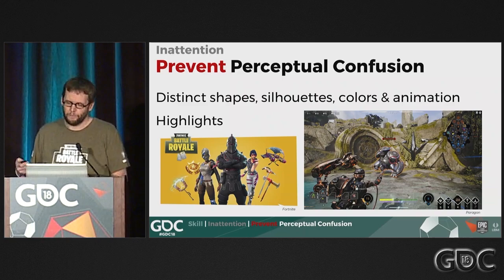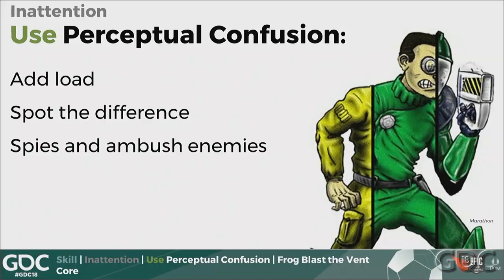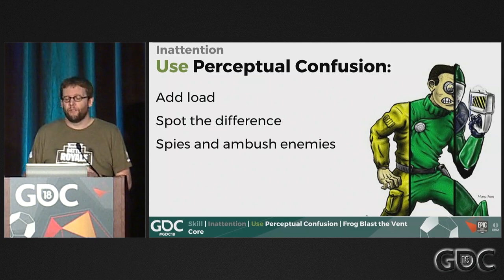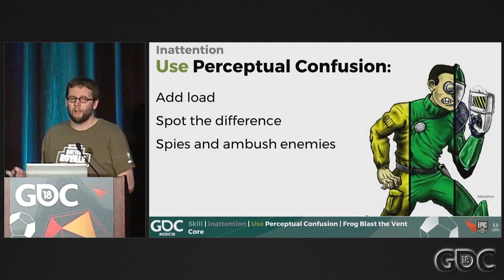You can of course use perceptual confusion intentionally. Spot-the-difference and hidden object games do this all the time. The Bob from the old Marathon games was an ally, but could be taken over by aliens and run at you and explode. They look the same, so a lot of players would just kill every Bob they saw regardless. This is a way of using perceptual confusion intentionally.